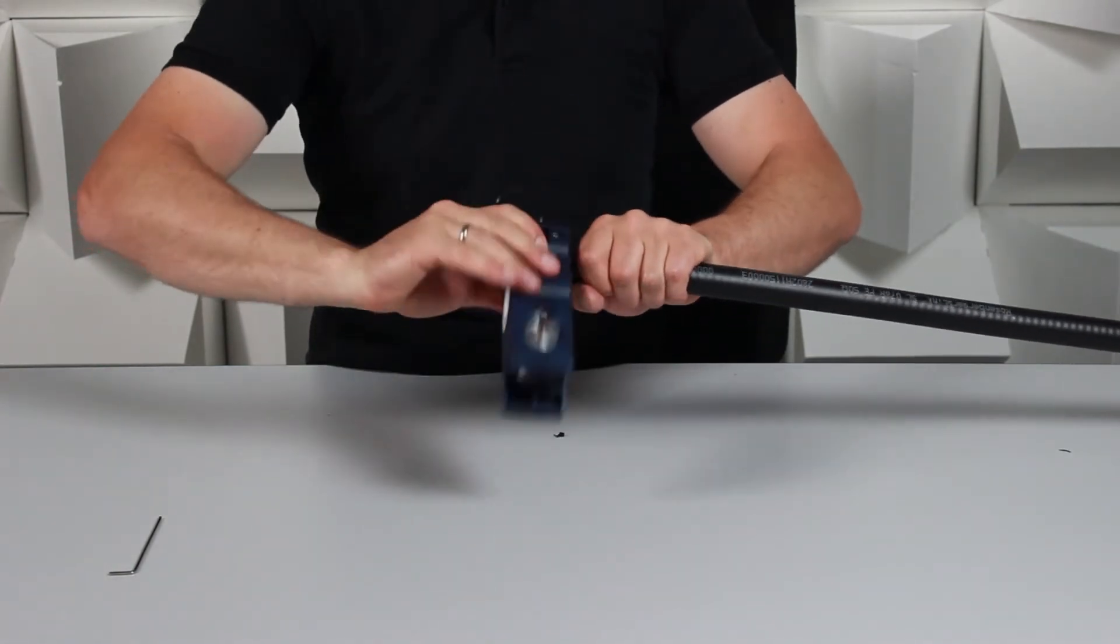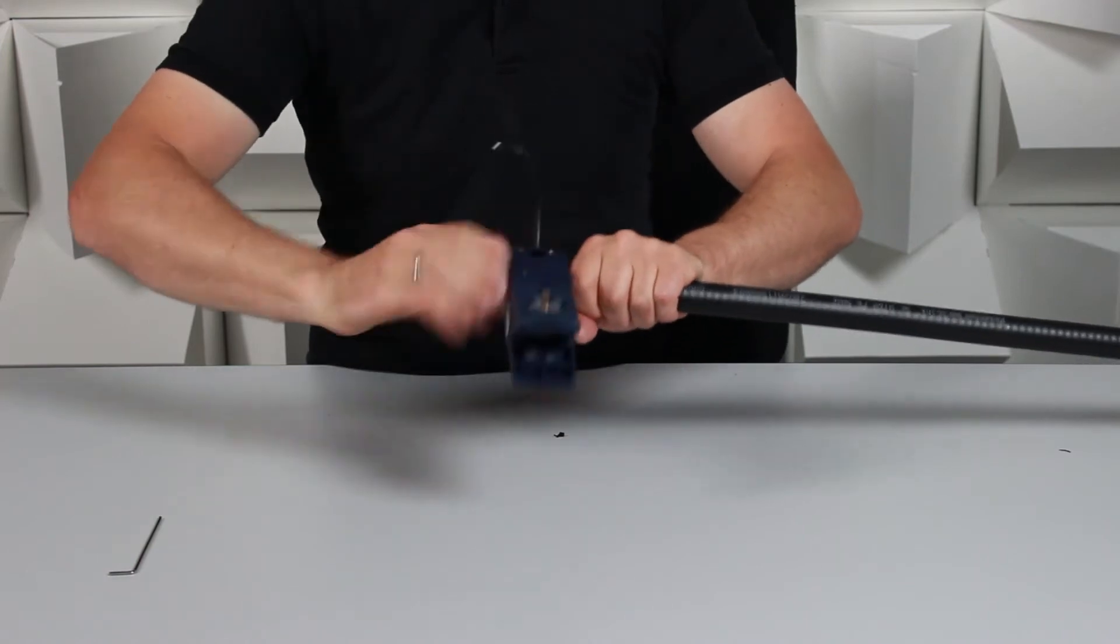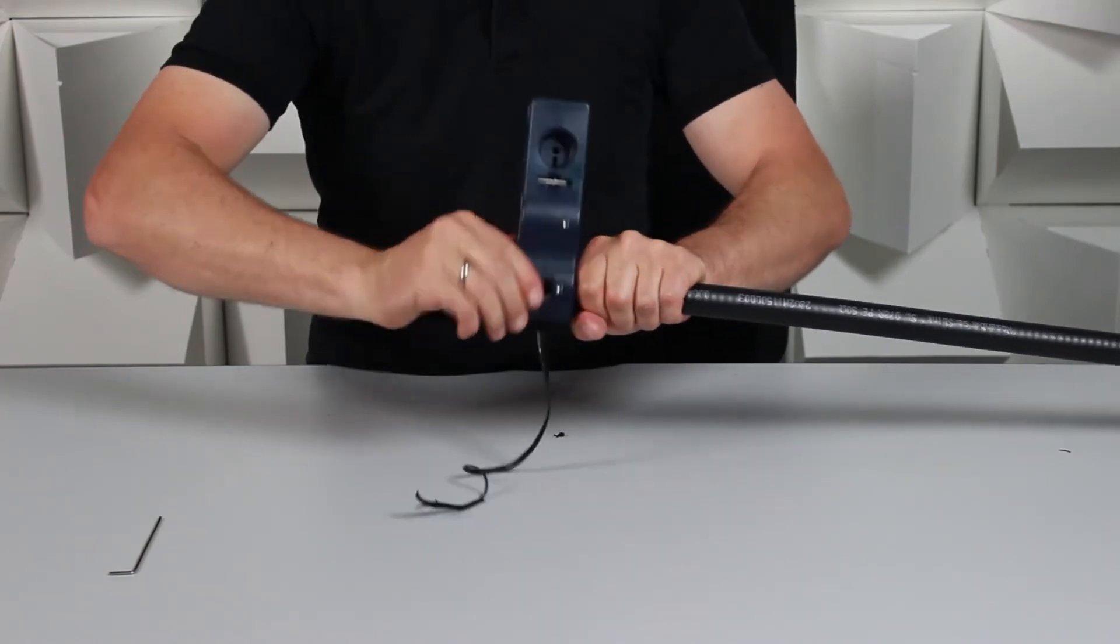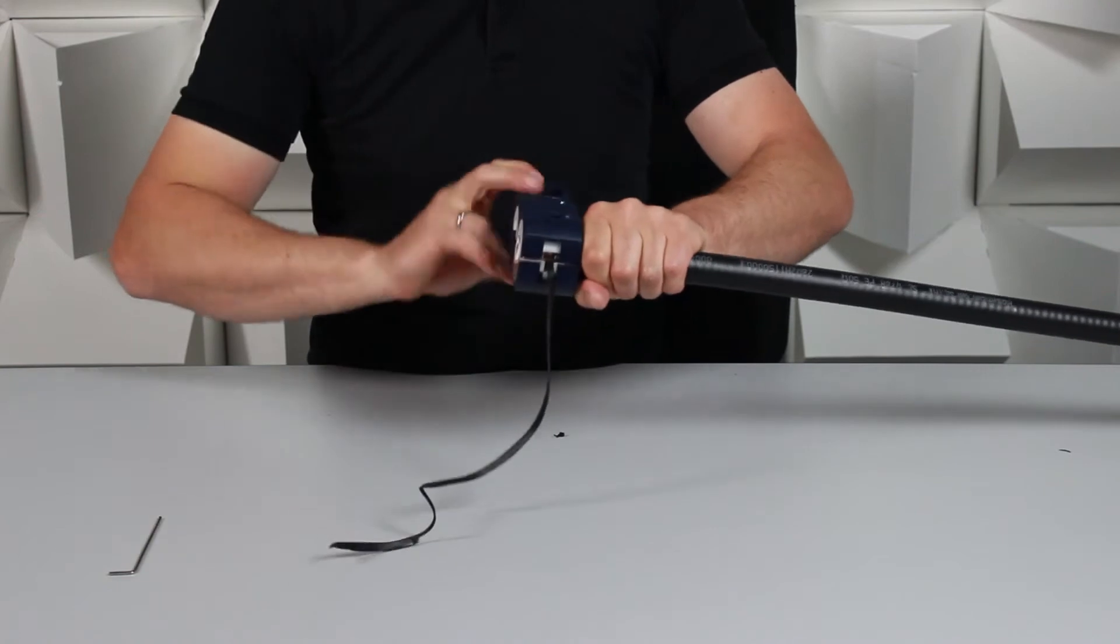Slowly feed the cable through the tool to peel the jacket away, and by doing so there will be no damage to the cable itself.